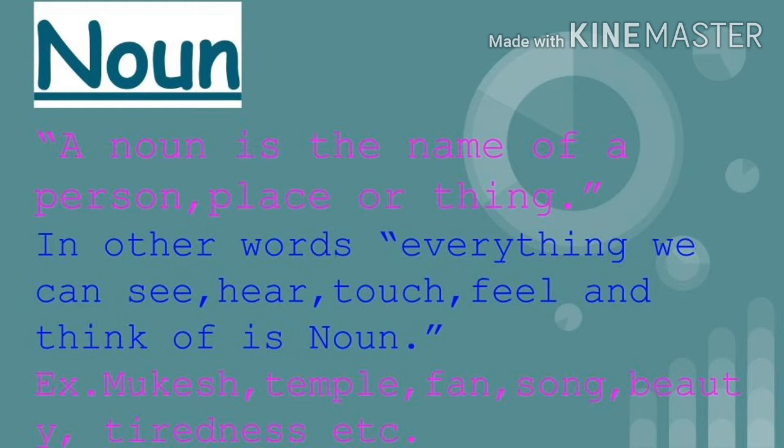In these examples, Mukesh is the name of a person, temple is the name of a place, fan is a thing, song is also a thing, beauty is also a thing that we can feel, and tiredness is a thing that we can only feel. Beauty and tiredness are such things which we can't see. These are all nouns.